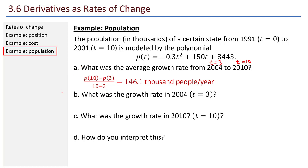For B, what was the actual growth rate in 2004? How do I calculate that? This is where I need the derivative. So I take the derivative of p and plug in 3. And it turns out that p'(3) is 148.2 thousand people per year. We can do the same process for C, the growth rate in 2010. p'(10) is 144 thousand people per year.